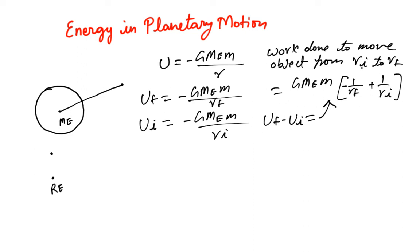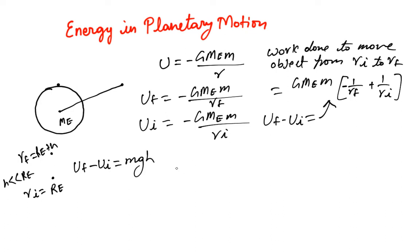We also showed that if ri equals Re (the radius of the earth) and rf equals Re + h, where h is very small compared to Re, then uf - ui can also be written as mgh. So the difference in potential energy between two points separated by a small distance h near the surface is mgh.